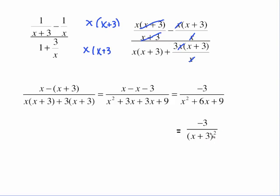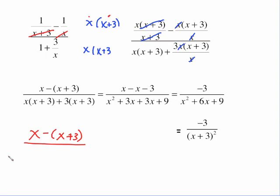I wrote it in that factored form because it matches the answer from Method 1 in the other video. If you're comfortable with canceling, you can skip some of the rewriting: (x+3) cancels with (x+3) giving x times 1, and x cancels giving minus (x+3) on top, with x(x+3) on the bottom and 3 times that. This brings you to the same place. Whether you write everything out or cancel mentally is just a matter of preference.